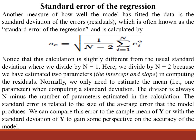In the usual standard deviation we divide by n minus 1, but in this formula we divide by n minus 2 because we have estimated two parameters — the intercept and the slope — in computing the residuals or errors. Normally, we only need to estimate the mean, that is one parameter. The divisor is always n minus the number of parameters estimated in the calculation.